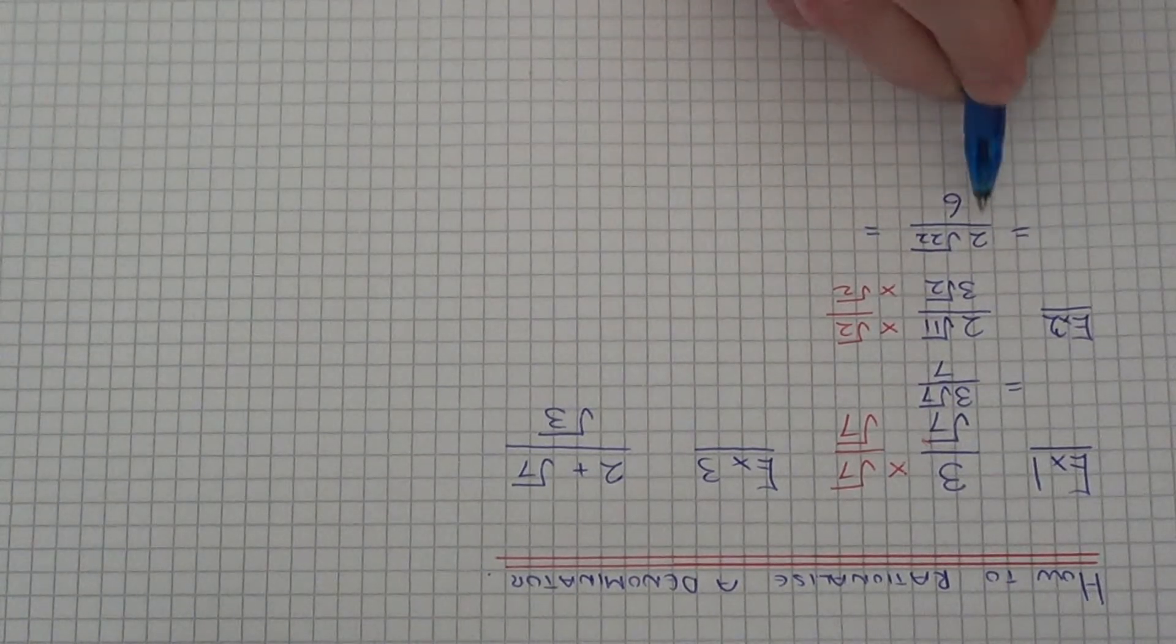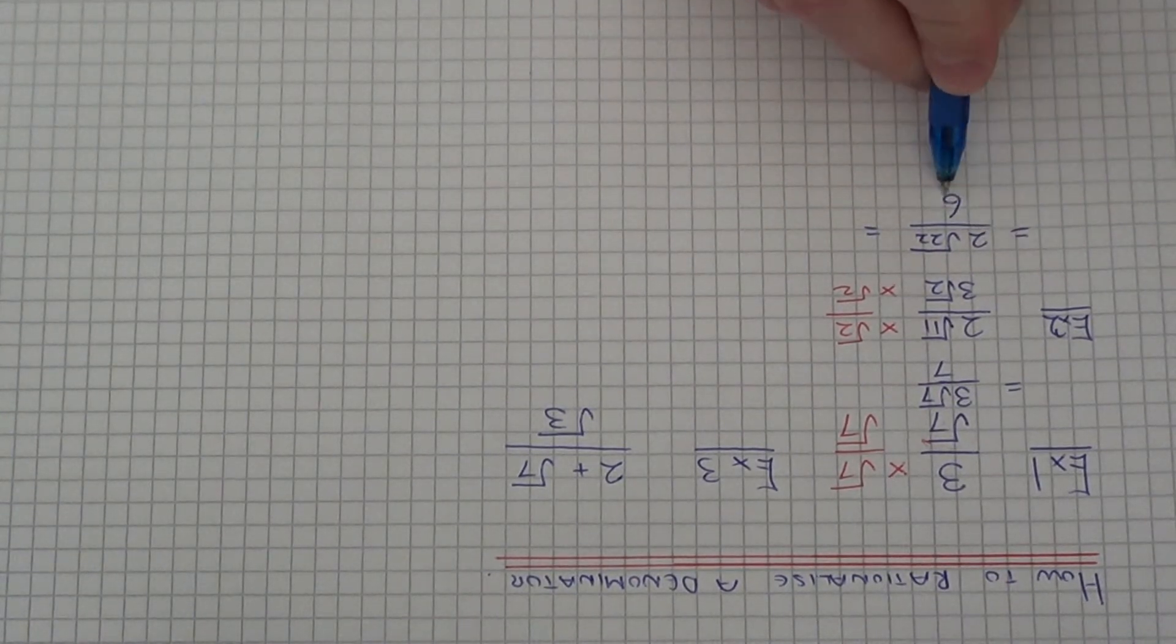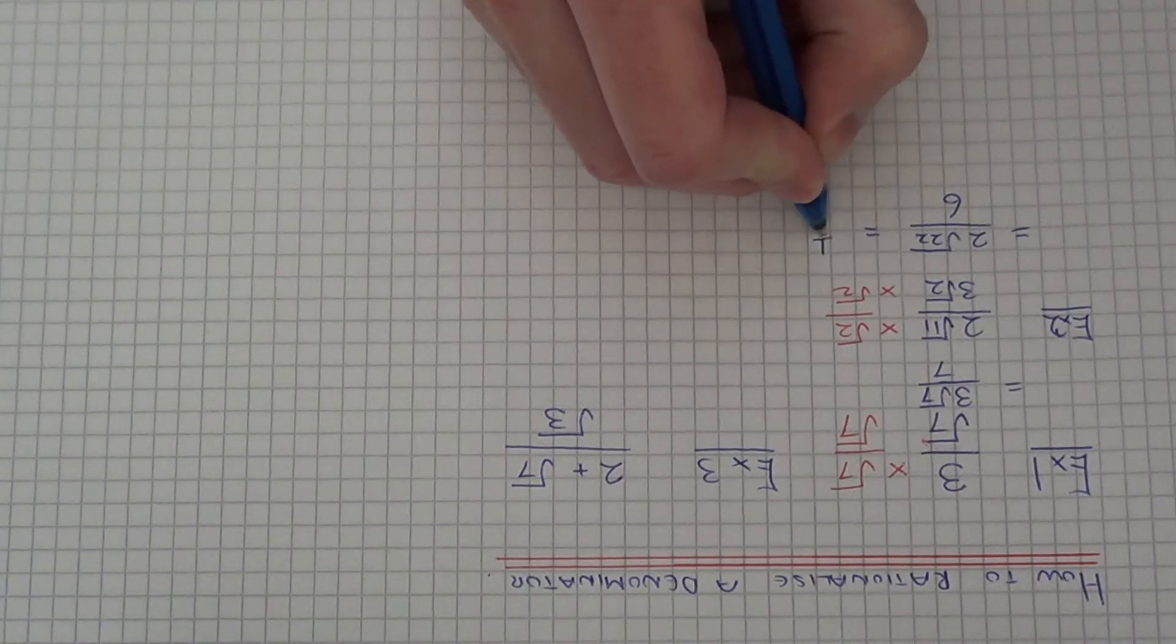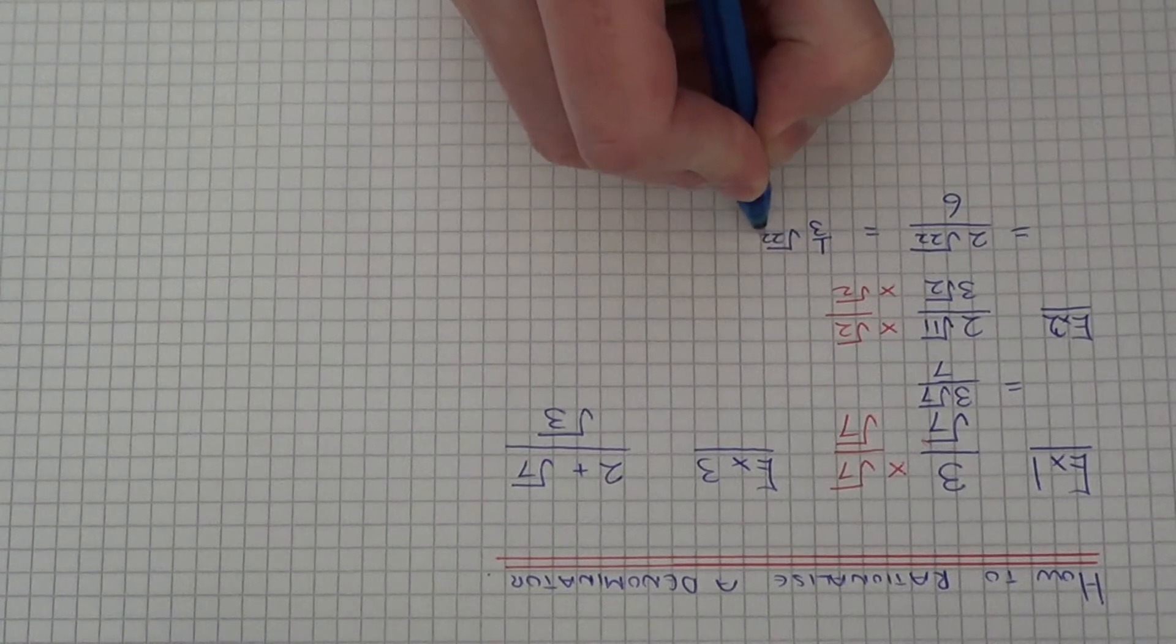On this one, we can do a little bit more simplifying because 2 out of 6, 2 sixths cancels to 1 third. So we can write this one as a third root 22.